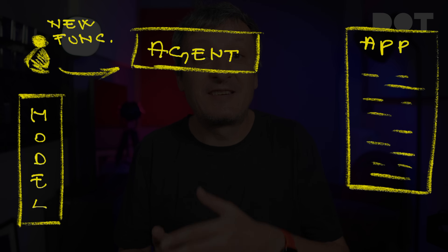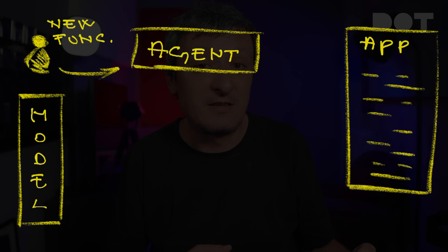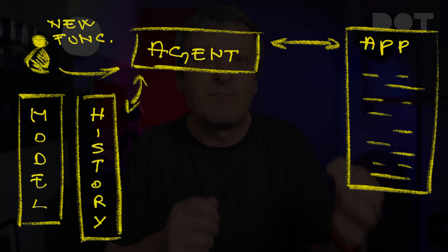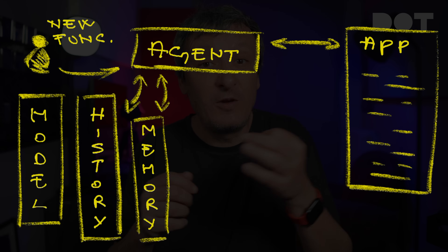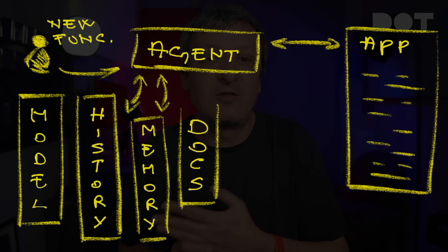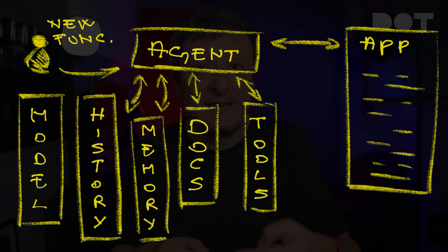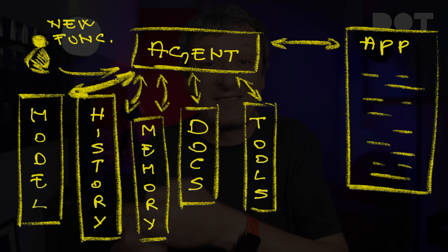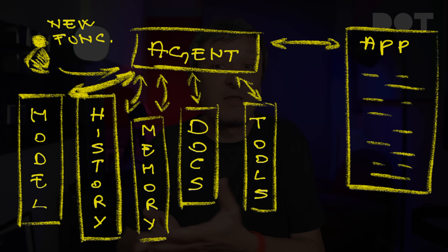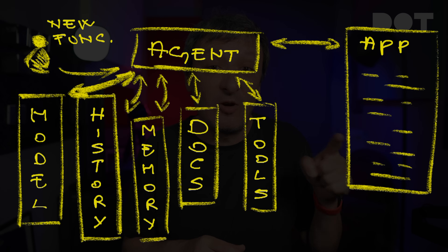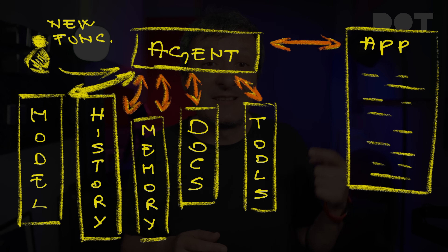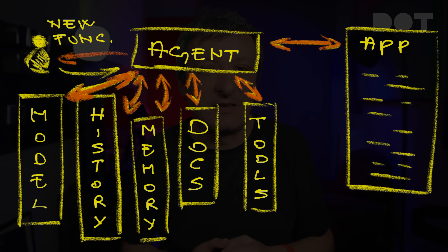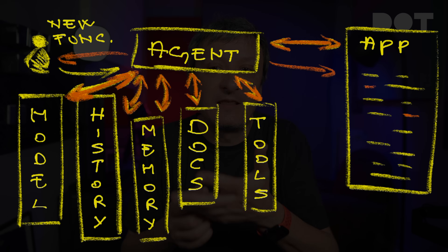Instead, the agent takes our request and does some work to generate the final context. It might take a look at the history of previous requests, go through the existing code, consult its internal memory for what we did in the past, find up-to-date documentation, or execute some tools. It might make many rounds until it feels ready to talk to the model by sending it everything it gathered so far. It might not even stop there — it might take the output of the model, do more digging, expand the context even more, and talk a few more times to the model until it comes with the final answer or performs some actions like updating existing code.